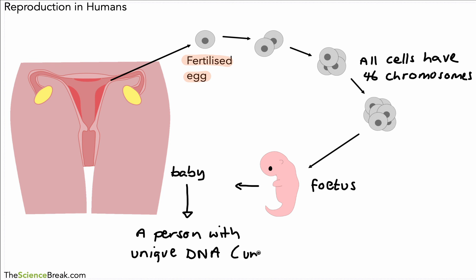The fetus — our developing baby — will have 46 chromosomes in all its cells, and will go on to develop into a baby that can be born. This baby is a person with unique DNA — the only single person with that DNA on the planet, unless they are an identical twin. So everybody has unique DNA unless they are identical twins. Thanks for watching, and I will see you soon.